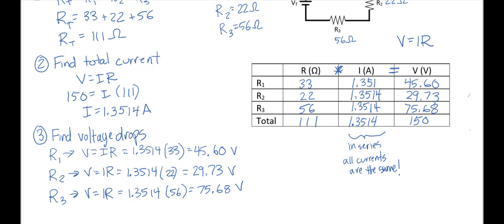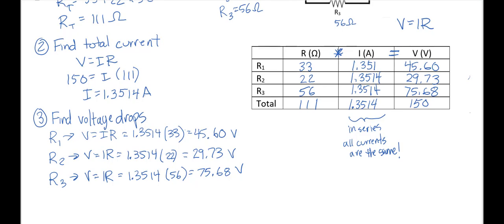I do want to show you one last thing. And this is a final check. If you look at all these voltage drops right here, and if you add them together, so I'm going to take 45.60 plus 29.73 plus 75.68. If I add those all together, what I'm going to get is 150.01. And if you notice, that is the same as the voltage, my total voltage that I had over here. It's a little bit different because of rounding. It's not 150 even. It's 150.01. But as long as you're in that area, within maybe a volt or so, then you can say, yep, this has got to be right. Because all of the voltage gets used up by all of the individual resistors. And so when I add up all those voltage drops, it should be equal to my voltage that I started with.